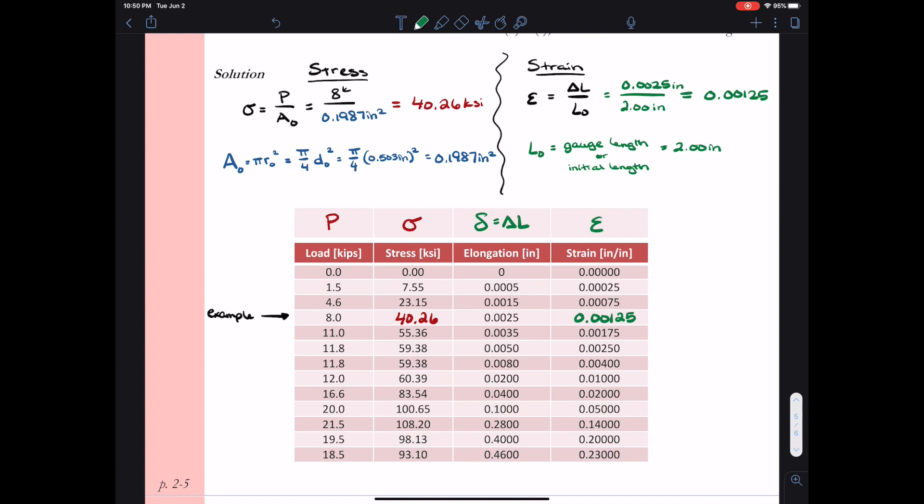Now we're going to have to do this for all the data points. So I recommend that as we do it, if you have a large data set, you probably want to get used to using something like Microsoft Excel in order to tabulate all the data. You can see the example calculations. You could set that up into Excel. You could drag and drop the formula to all the rows. So you can quickly calculate stress from the measured load and you can calculate strain from the measured elongation.